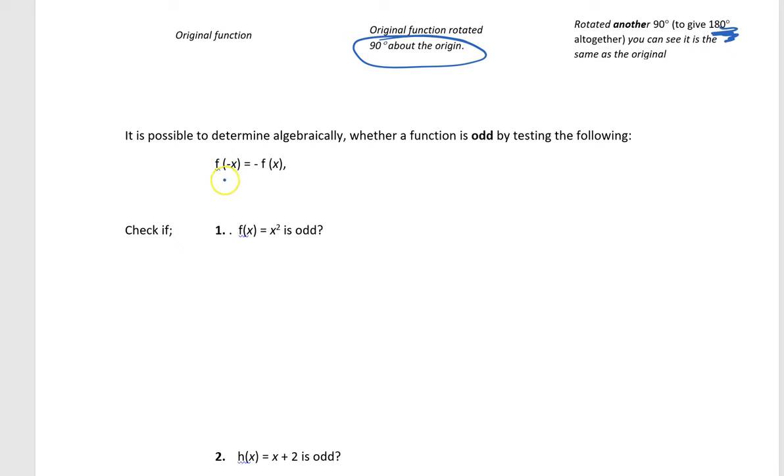If that then is equal to the negative of the function, so you put negative outside whatever the whole function is, distribute the negative throughout the function. Now, if those two expressions end up being exactly equal algebraically, then you can say you have an odd function.